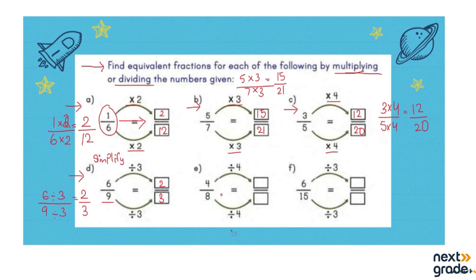Likewise, in the next part: 4 divided by 4 is 1, and 8 divided by 4 is 2. So we write 1 over 2. The equivalent fraction of 4 over 8 is 1 over 2.